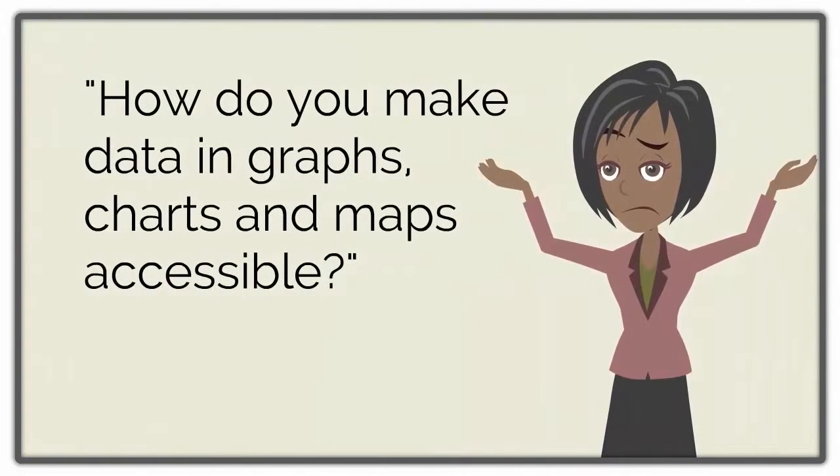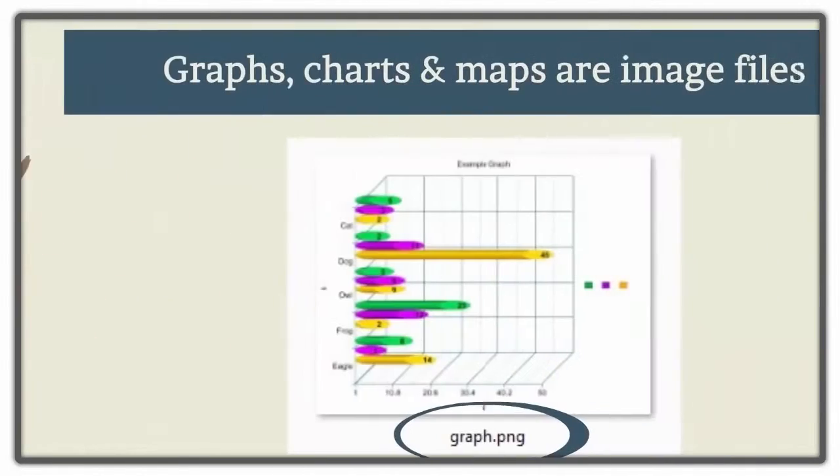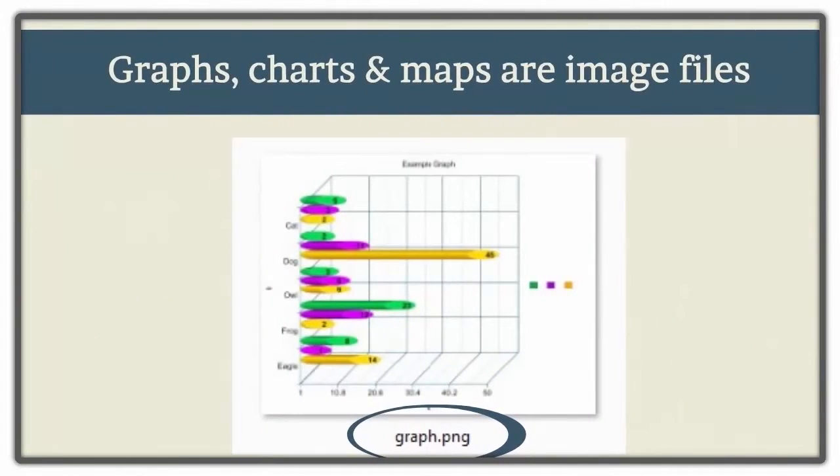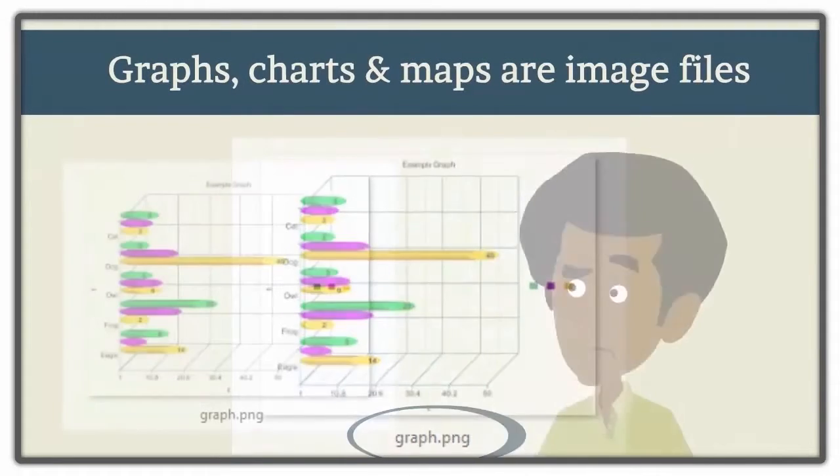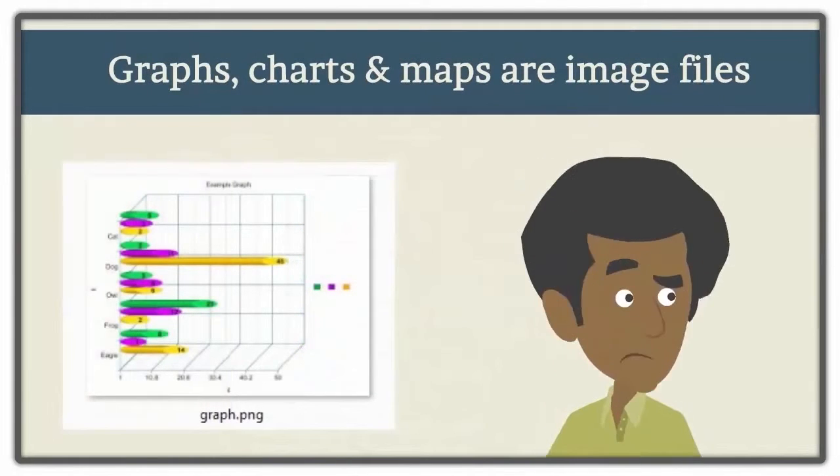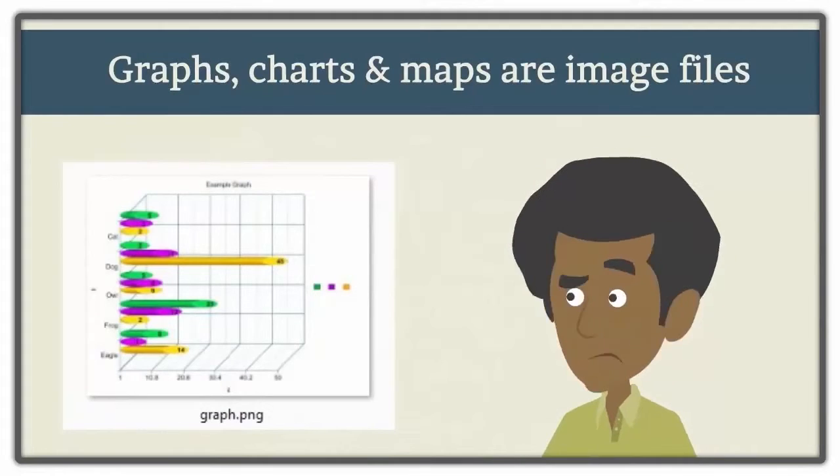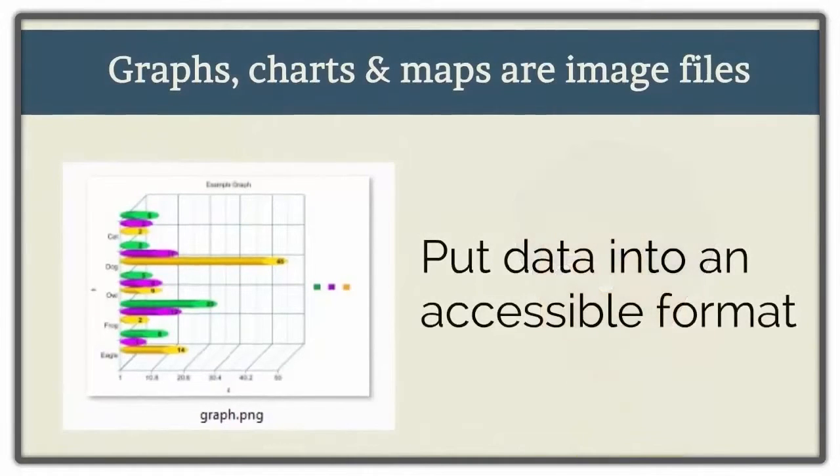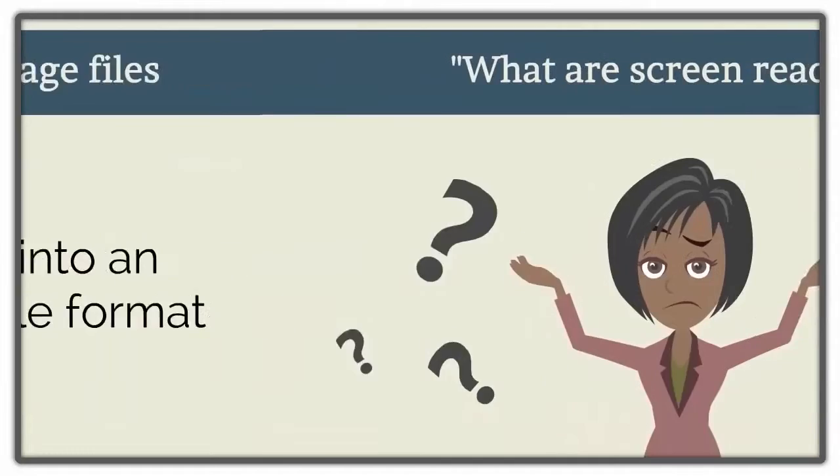How do you make data and graphs, charts, and maps accessible? Most graphs, charts, and maps are just images, so to get information from them you have to be able to see the graph, chart, or map. The only way to make this information accessible to users who are fully blind is to translate the data into a format that assistive technology, like screen readers, can read.